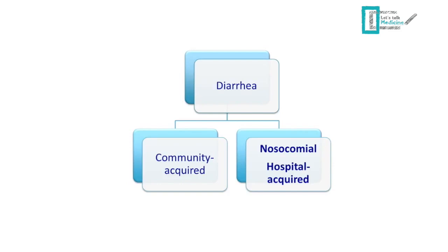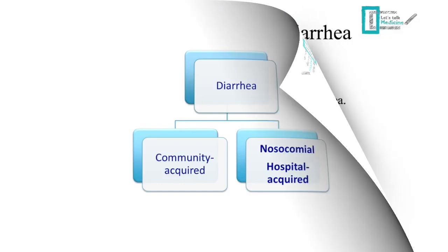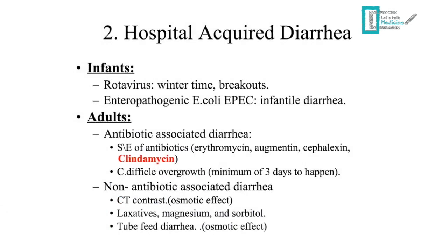Moving to nosocomial or hospital-acquired diarrhea, classified by age group. In infants, rotavirus is the most common cause, occurring in wintertime and in outbreaks. The second organism is enteropathogenic E. coli, which causes infantile diarrhea.